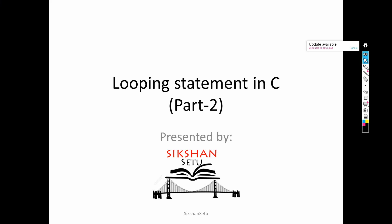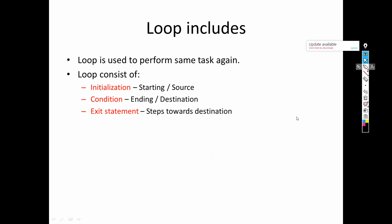Hello friends. In this video we will be discussing the concept of while loop and how to use it in C programming language. In the previous video we saw that there are three important things about looping: first is initialization, which specifies the starting of the loop; second is condition, which specifies the destination; and third is the exit statement, which moves you towards the destination — it may be an increment, decrement operator, or any other statement.